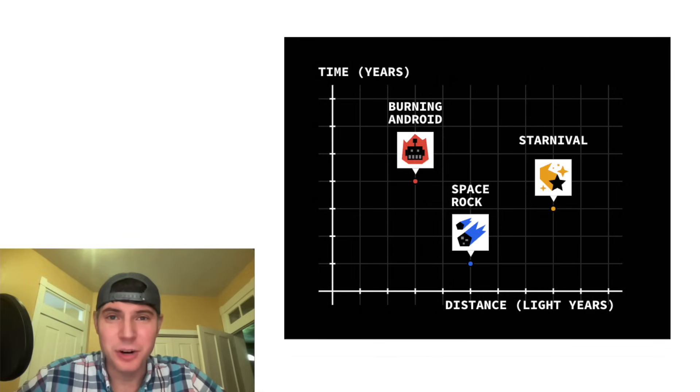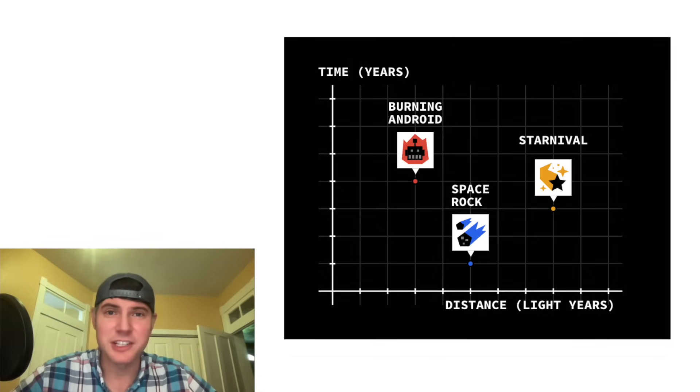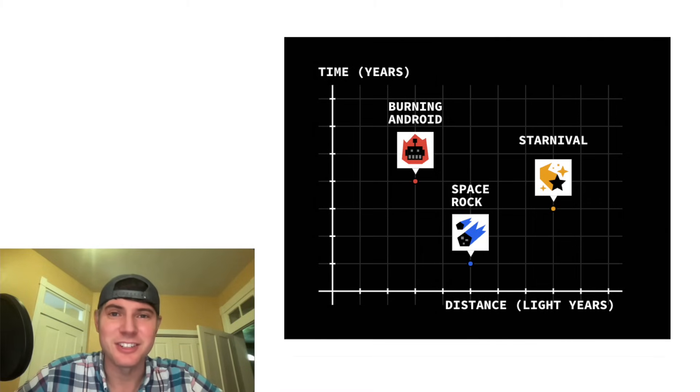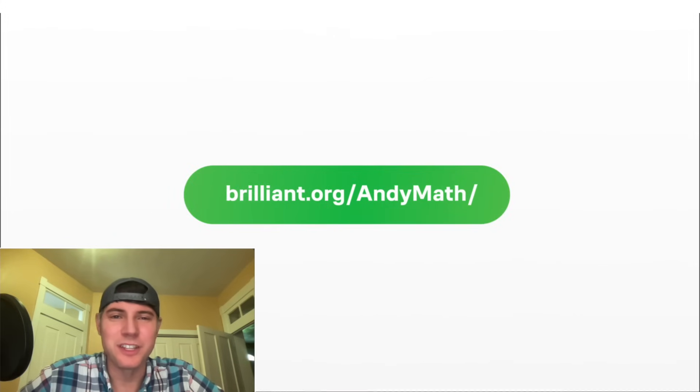So while you're at the Space Rock concert, a rumor is spread that the Starnival concert in two years is not going to be any good. And the question is asking, will the negative rumor affect the attendance of the Starnival concert in two years? And the answer is no, because while the Starnival concert is two years in the future, the distance is three light years away. So the news of the rumor would not even reach anybody who's going to attend this concert. I'm struggling to explain it in just one sentence,